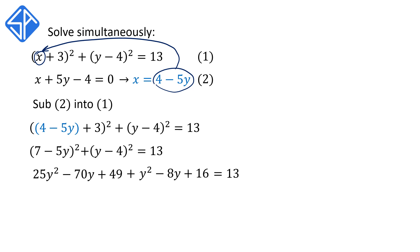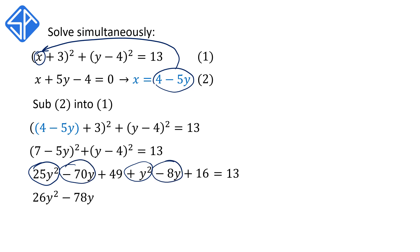Then we're going to simplify the equation by collecting like terms. So 25y squared plus y squared gives us 26y squared; minus 70y minus 8y gives us minus 78y. Then 49 plus 16, and we're going to subtract 13 from both sides so that the right-hand side becomes 0, and the left-hand side gives us plus 52.